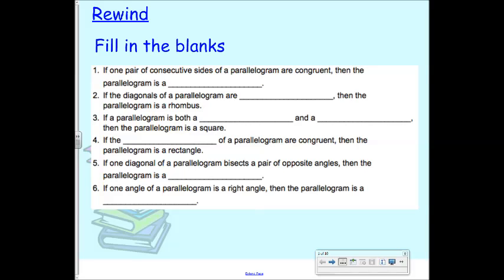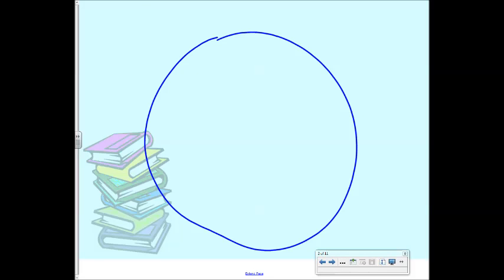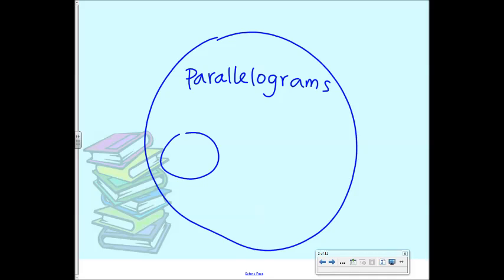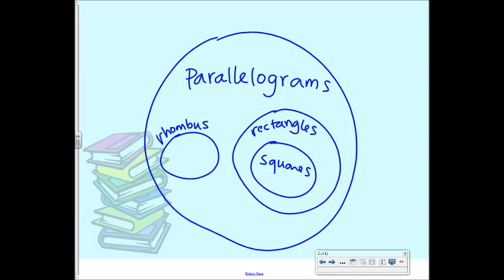So we've got this giant circle where we have parallelograms. And then within parallelograms, what do we have? We have rhombuses, and we have rectangles, and inside the rectangle circle is squares. Why do I draw them like this? Because all squares are rectangles — it's kind of like how you do whole numbers and natural numbers. All rectangles are parallelograms, and all rhombuses are also parallelograms. Are rhombuses rectangles? No.